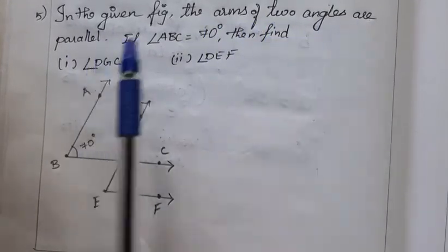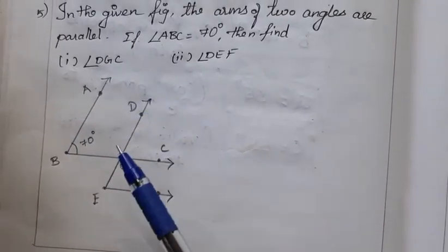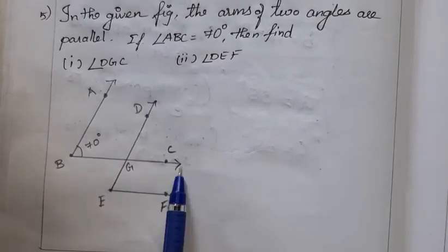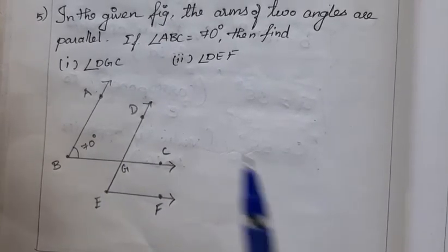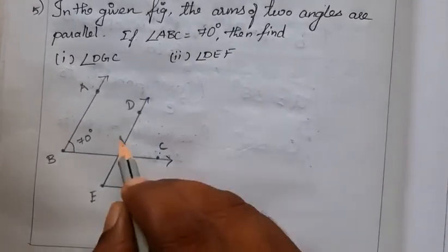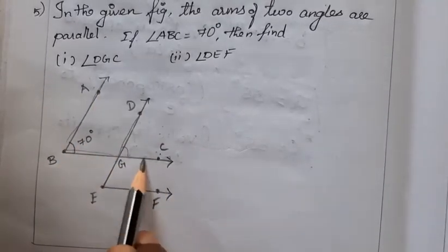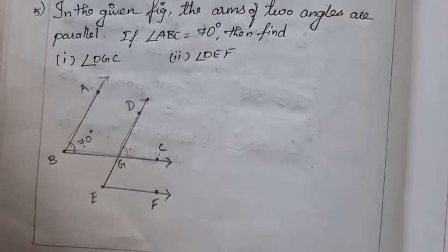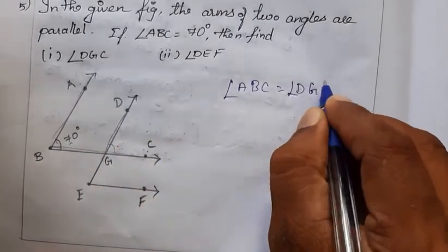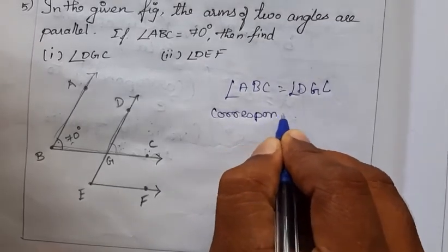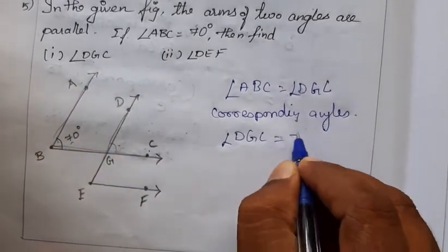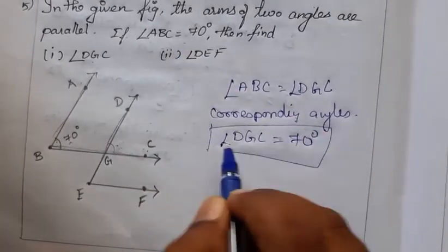Problem: In the given figure, the arms of two angles are parallel — BA is parallel to ED and BC is parallel to EF. If angle ABC is 70 degrees, find angle DGC. Since BA∥ED and BC acts as a transversal, angle DGC corresponds to angle ABC, so angle DGC equals 70 degrees.